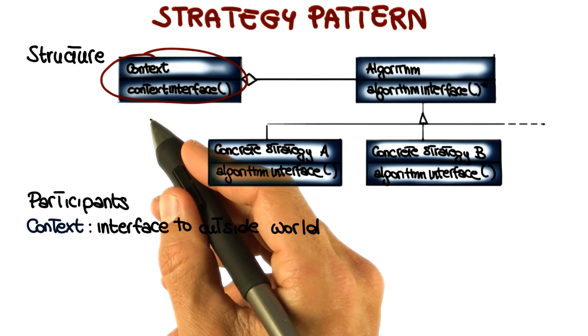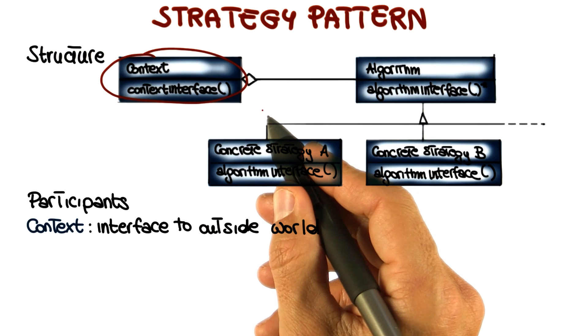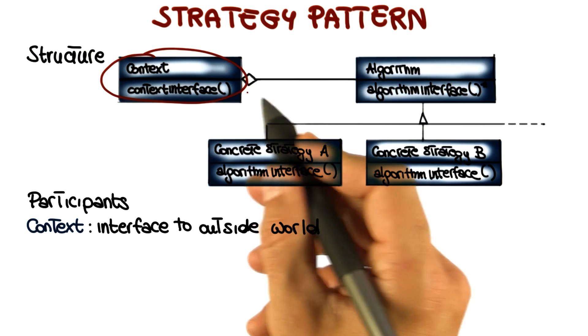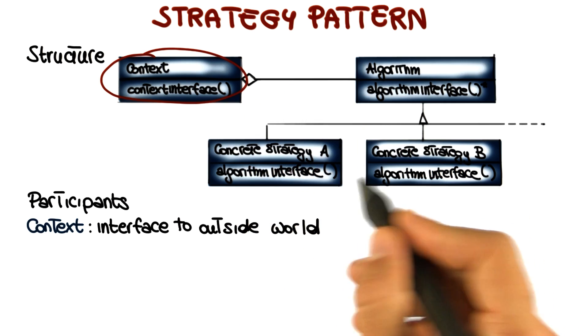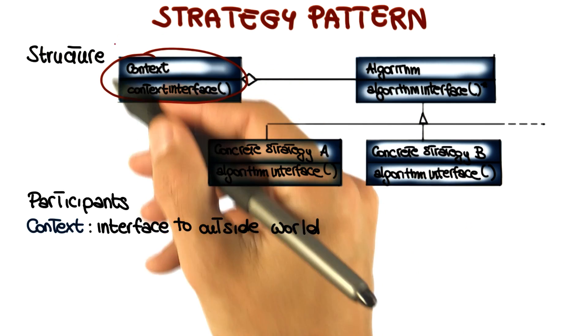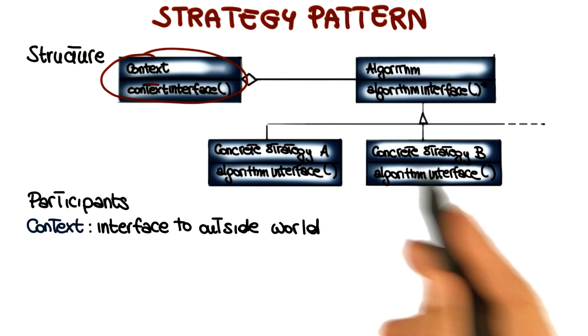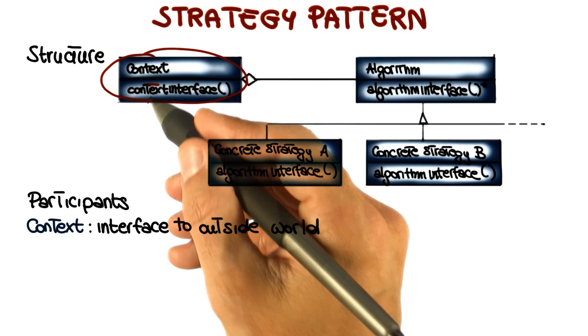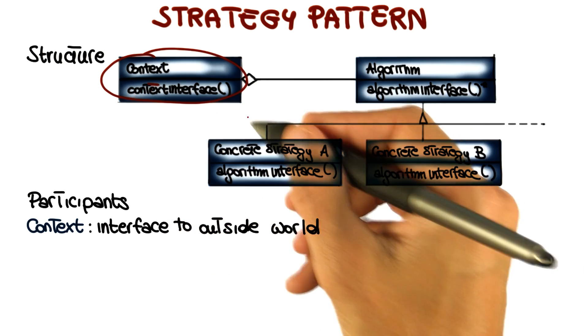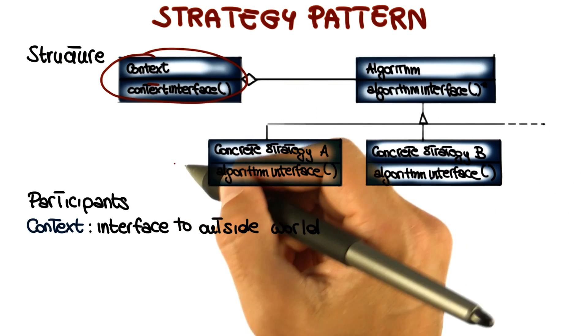The context is the interface to the outside world. It maintains a reference to the current algorithm and allows for updating this reference at runtime. So basically the outside world will invoke the functionality provided by the different algorithms by using this interface. And depending on which algorithm is currently selected, that's the one that will be executed when the functionality is invoked.